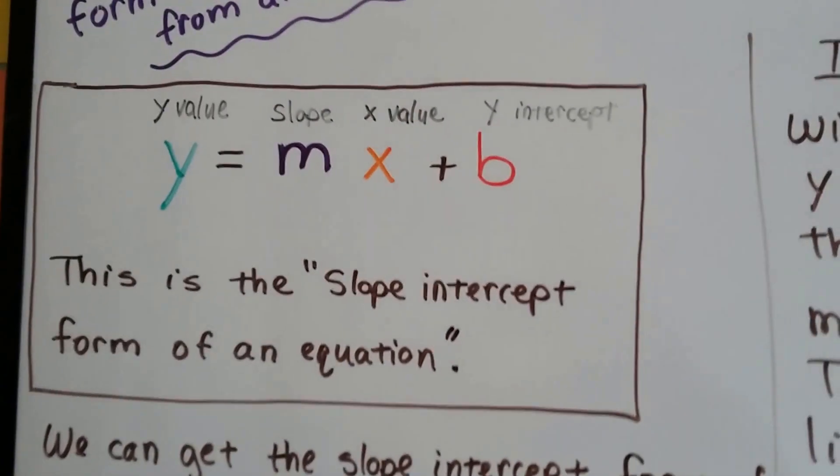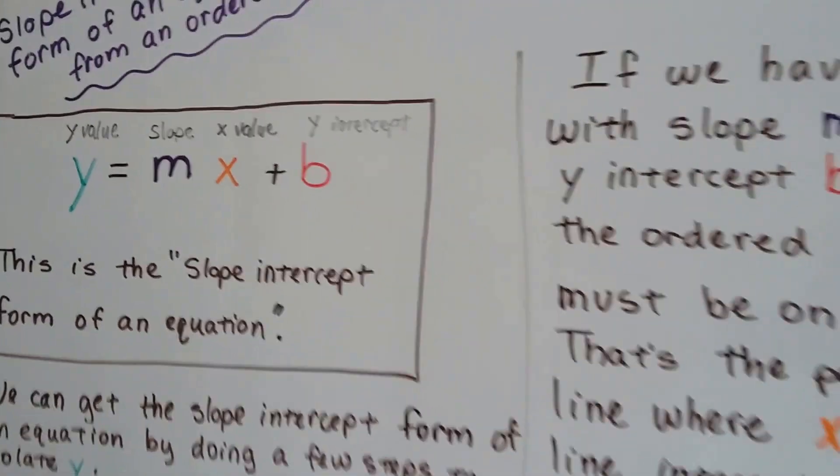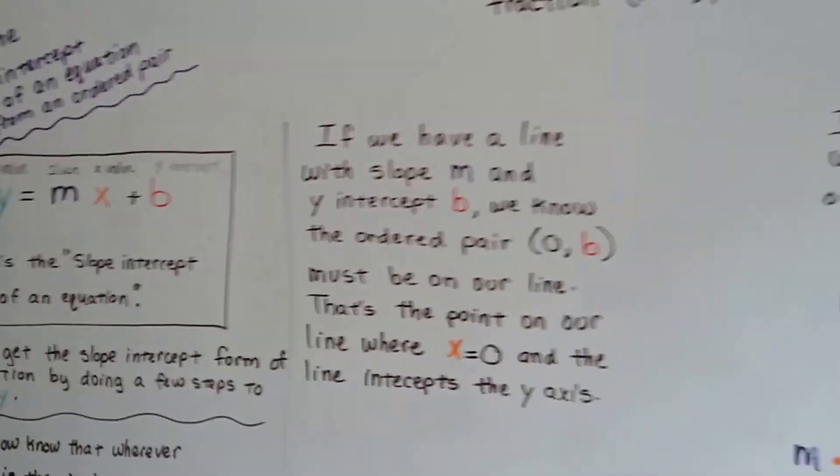Does that look familiar? y equals mx plus b. Look at that. So we were able to get the slope-intercept form of an equation from ordered pairs.